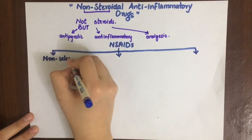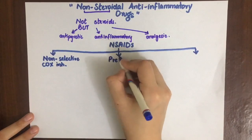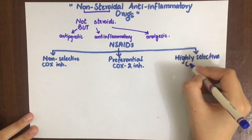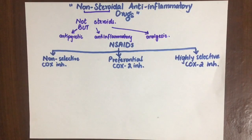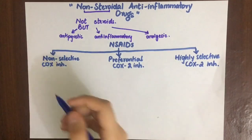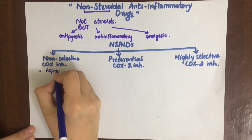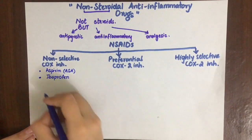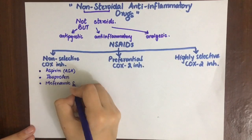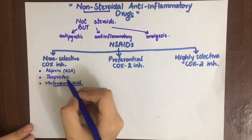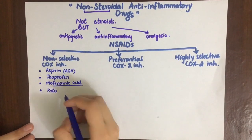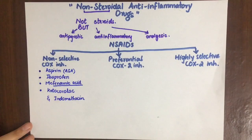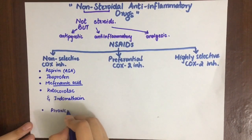NSAIDs can be classified into non-selective Cox inhibitors, preferentially Cox-2 inhibitors, and highly selective Cox-2 inhibitors. Non-selective Cox inhibitors include aspirin (a salicylate), ibuprofen (a propionic acid derivative), mefenamic acid (a fenamate), ketorolac and indomethacin (both acetic acid derivatives — indomethacin being the most potent NSAID), and piroxicam (an enolic acid derivative).